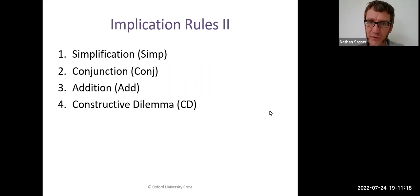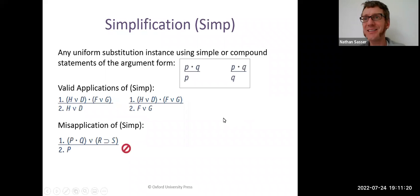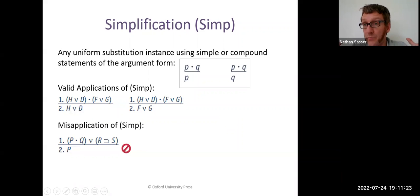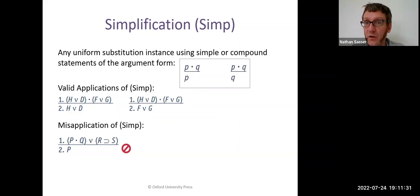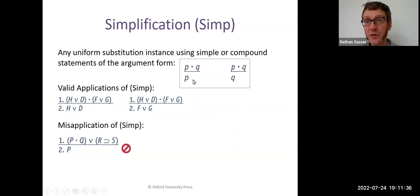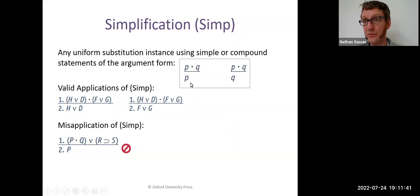Let's start with simplification. This is easy. If you've got a premise — and you only need one premise to use simplification — if you've got a premise that is a conjunction, P and Q, well, you know that P is true. You also know that Q is true. So you can conclude from any 'and' statement like this that either of the conjuncts are true.